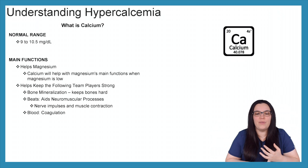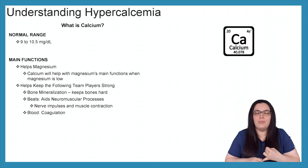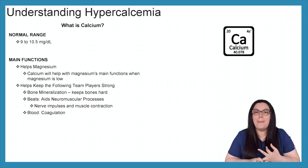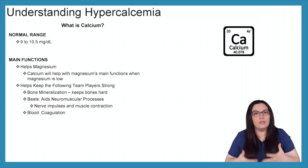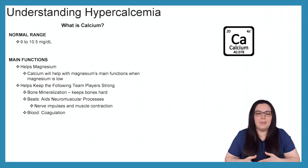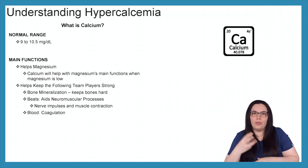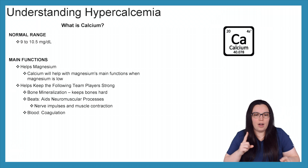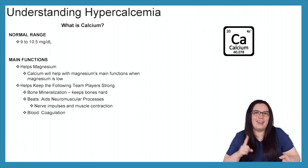Calcium helps keep the following team players strong: it helps with bone mineralization, keeping our bones hard. It helps with heartbeats. It aids in neuromuscular processes — so nerve impulses and muscle contraction is something that calcium also helps with. And lastly, it helps with our blood coagulation. So remember, it helps with our team players, our three Bs: our bones, our beats, and our blood.